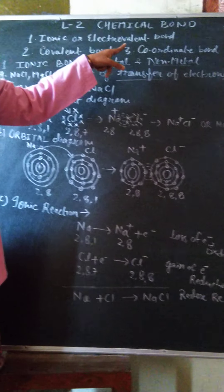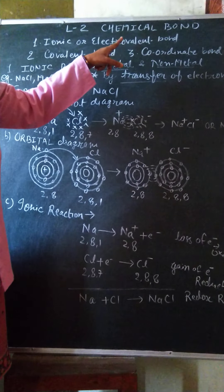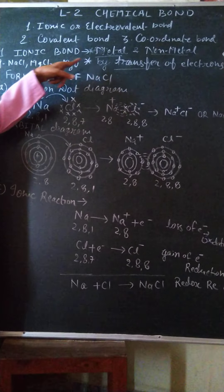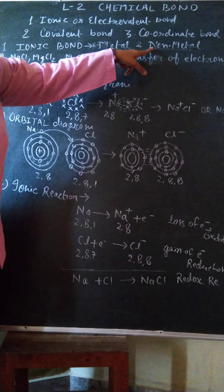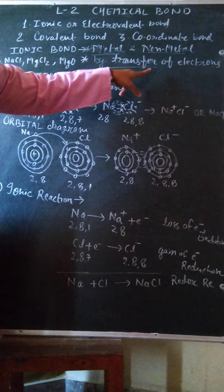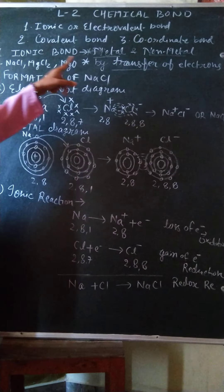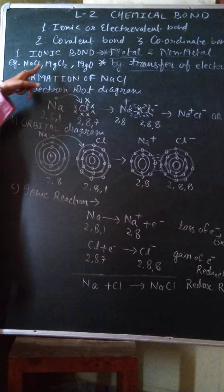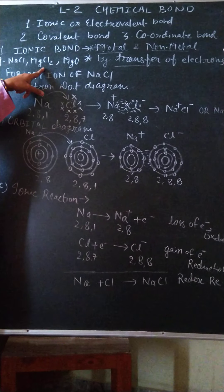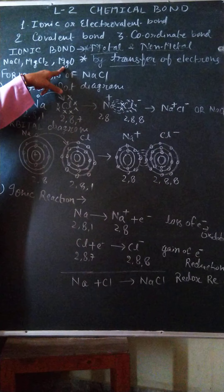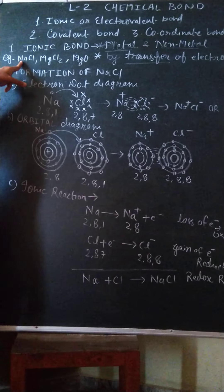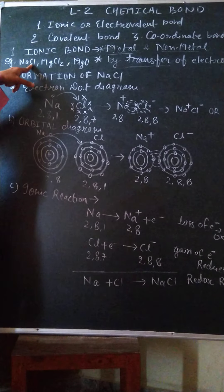One by one we will see their definitions with their examples. The first type of bond is ionic bond, which is formed between metal and non-metal by transfer of electrons. Examples of ionic bonds are sodium chloride, magnesium chloride, and magnesium oxide. In sodium chloride, sodium is metal and chlorine is non-metal.